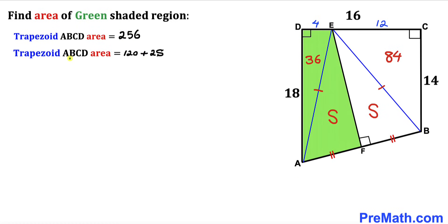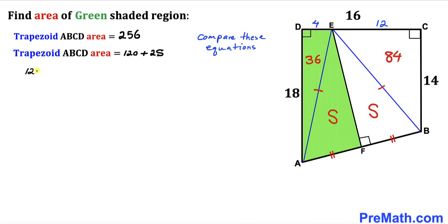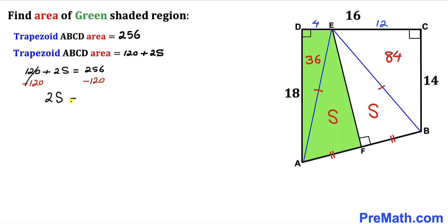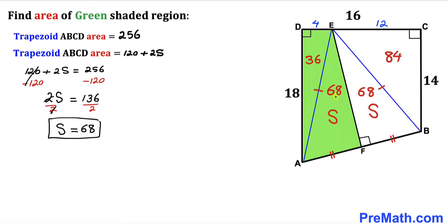Since both expressions represent the area of trapezoid ABCD, we equate them: 120 + 2S = 256. Subtracting 120 from both sides: 2S = 136. Dividing by 2: S = 68 square units. So each of those two triangles has an area of 68 square units.